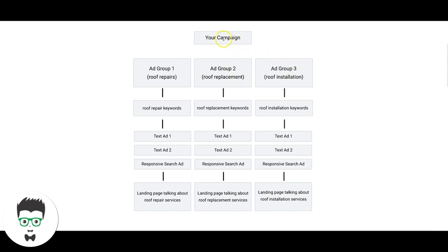The first step: you have your campaign — this is your overall campaign. Below it, inside your campaign, you have your ad groups: ad group 1, ad group 2, ad group 3, and so on. You want as many ad groups as you can possibly have — the more the better. We're using a roofing campaign as an example. Each ad group is going to be its own theme. Ad group 1 is 'roof repairs,' so the only keywords in that ad group have to do with roof repair — nothing about replacement, installation, or contractors.